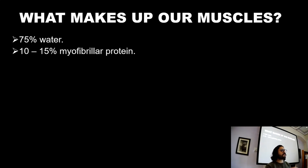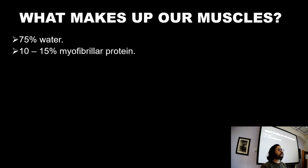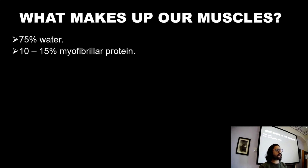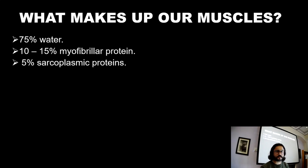Then we have about 10 to 15%, which is myofibrillar protein. Myofibrillar protein includes the actin filaments and the myosin heads — the actual contractile parts of the muscle that are involved in the power stroke that shortens the muscle. So 10 to 15% is myofibrillar protein; this is the business part of the muscle.